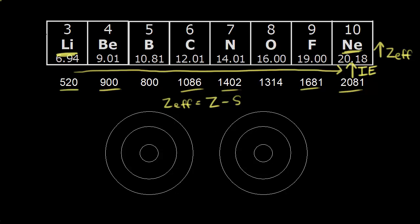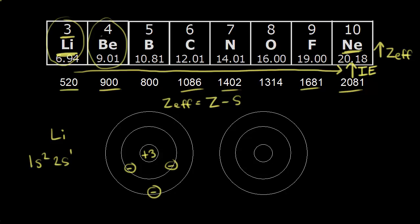Let's examine this in more detail, looking at lithium and beryllium. Lithium has atomic number three — three protons in the nucleus, giving a positive three charge. Lithium's electron configuration is 1s2, 2s1: two electrons in the 1s orbital and one in the 2s orbital. Beryllium has one more proton and one more electron, so a plus four nuclear charge, and its electron configuration is 1s2, 2s2 — two electrons in each orbital.